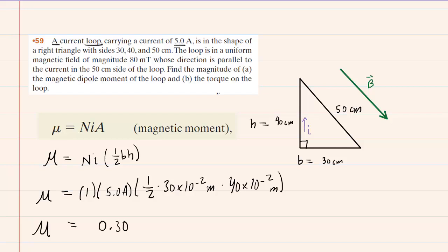If you look at the setup, the unit for the magnetic moment will come out to be amps, and then we multiplied meters by meters. That makes meters squared. So altogether it becomes amps times meters squared. And this would be the correct answer to part A of the question.